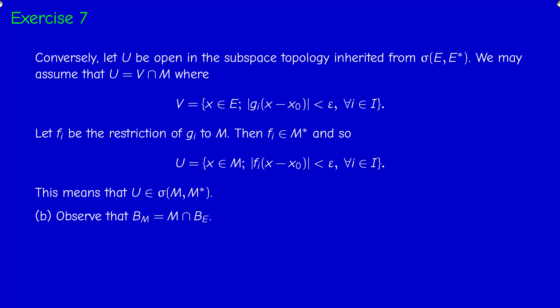Second question: we have to show that if M is a closed linear subspace of E and E is reflexive, then M is reflexive. For this, we use Kakutani's theorem. To prove M is reflexive, we prove that its closed unit ball B_M is weakly compact — weakly closed with respect to either sigma(M, M*) or the restriction of the weak topology on E to M.